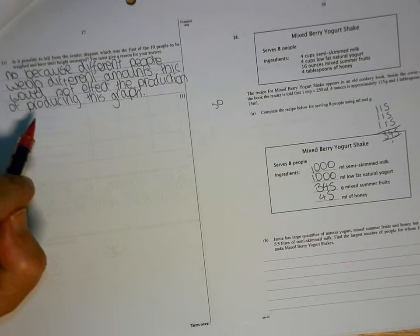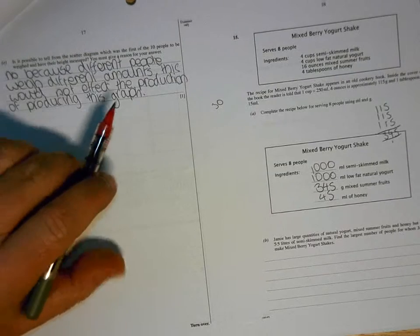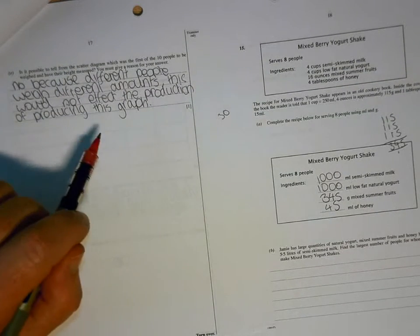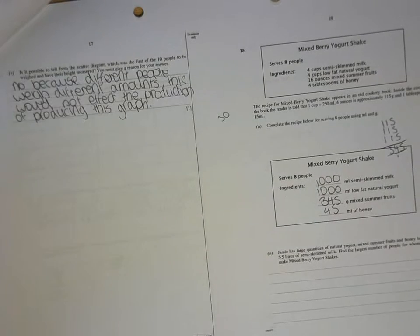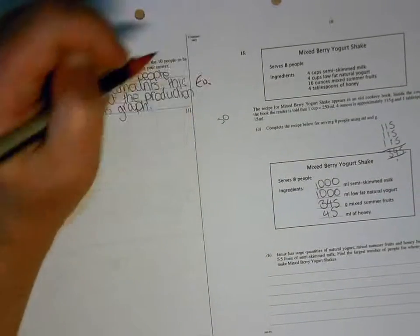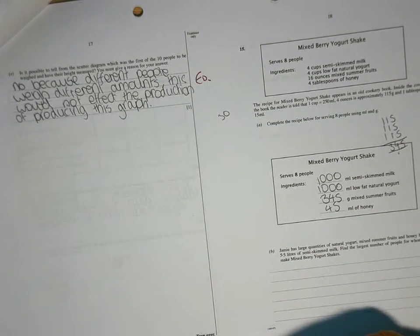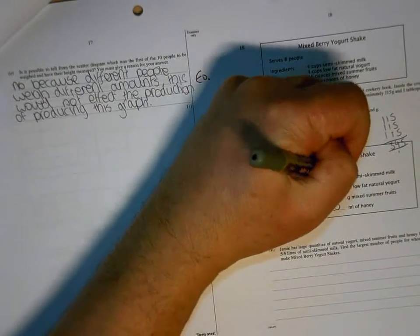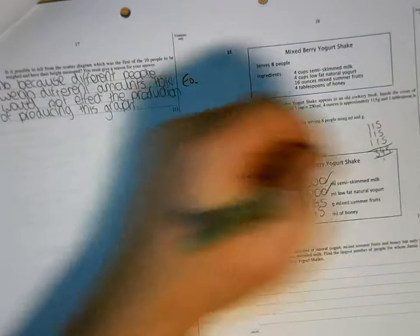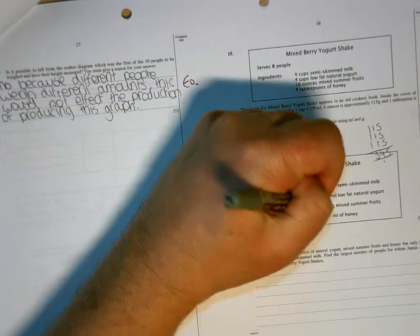That's not what we're looking for there. What they're looking for is for you to say you cannot tell what order they were put on the graph. Okay, 1,000 to 1,000. Those two are right.